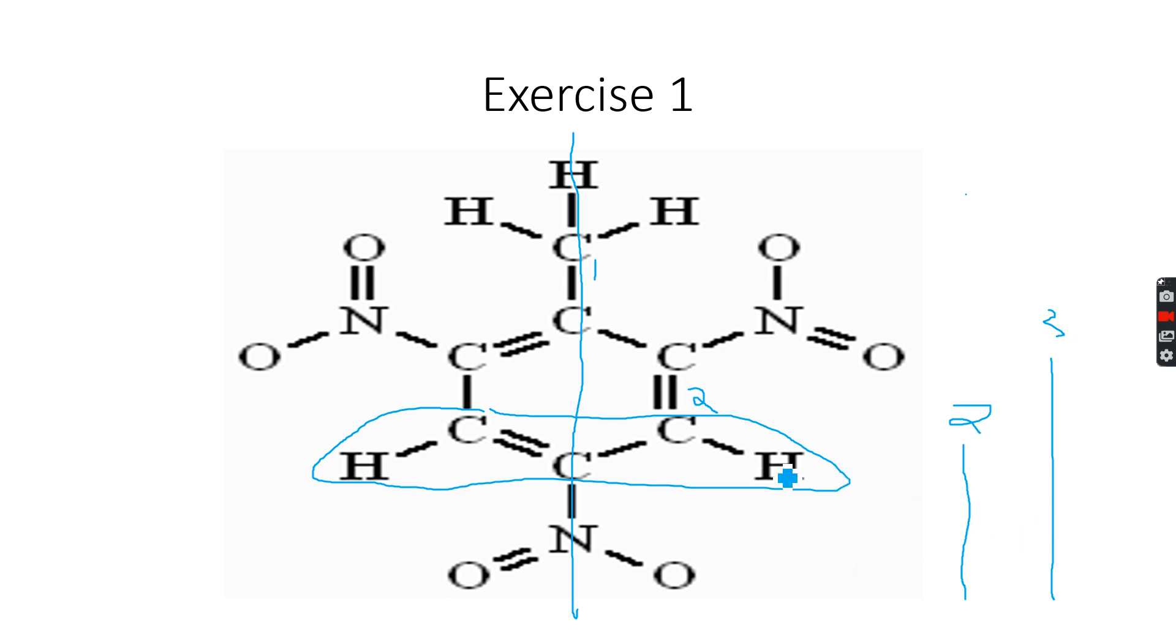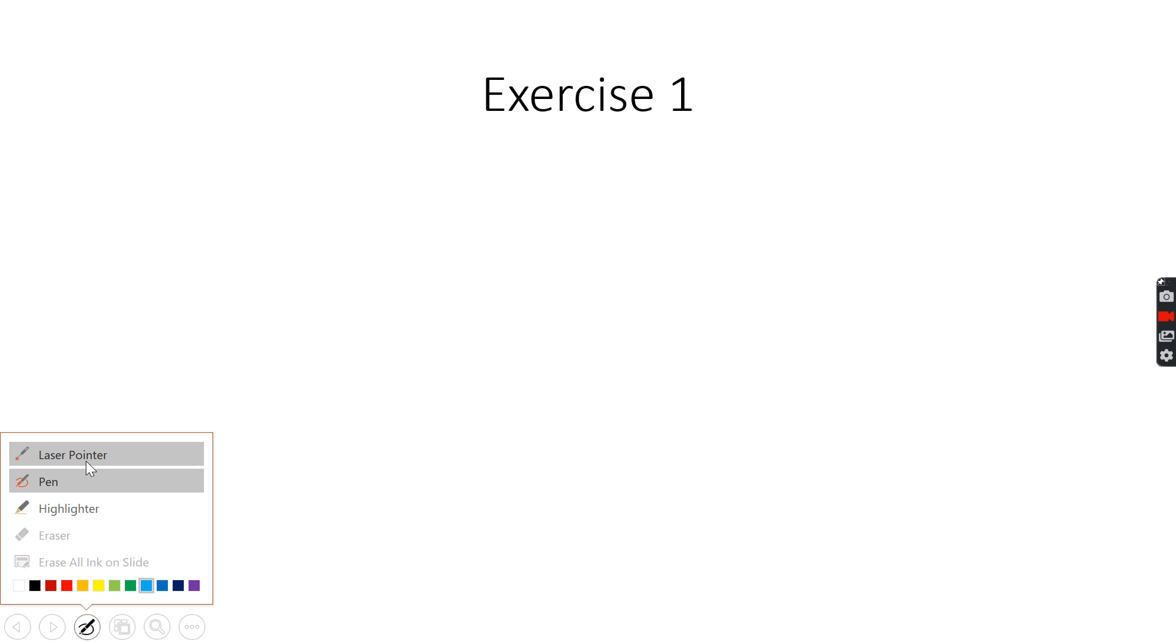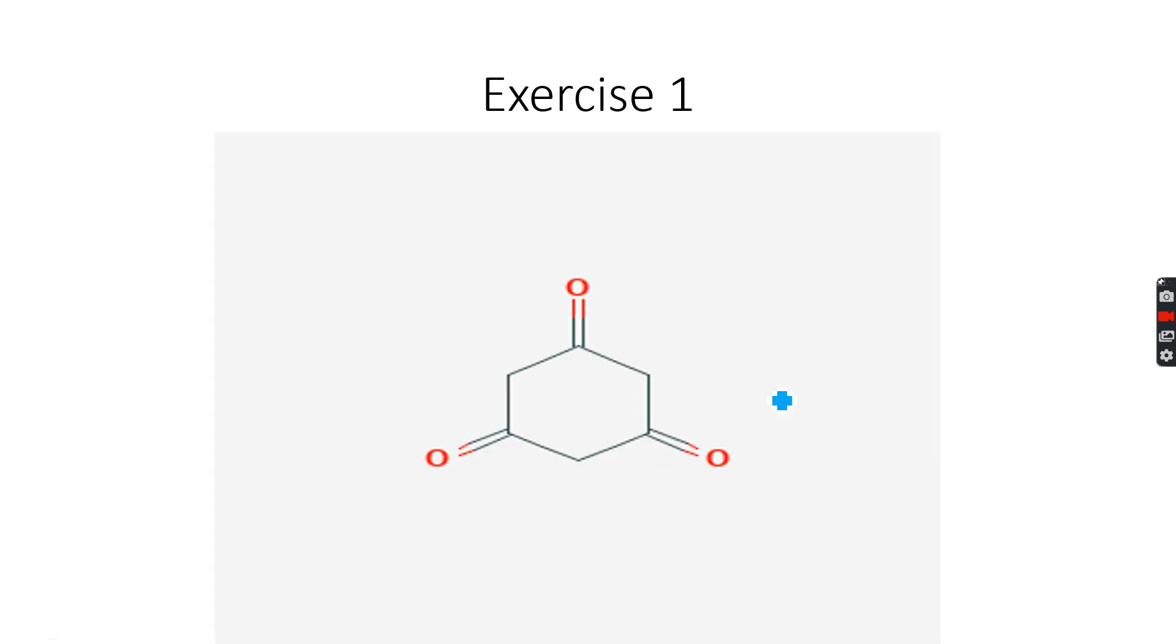No splitting in this case because the neighboring carbon atoms do not have any hydrogens attached to them. So last one for proton NMR. This molecule is a cyclic compound and it has ketone groups alternating over here as you can see.